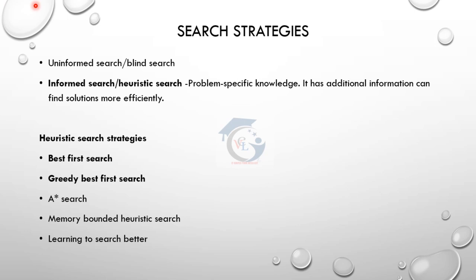But in informed search, we have additional information about the problem which helps us find the solution more effectively. That is the difference between uninformed search (blind search) and informed search (heuristic search). Topics include heuristic search, memory-bounded heuristic search, and learning to search better.